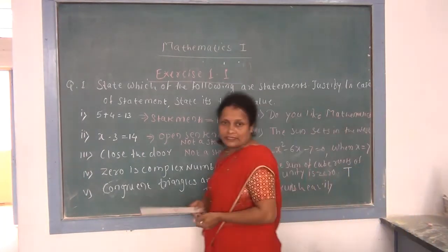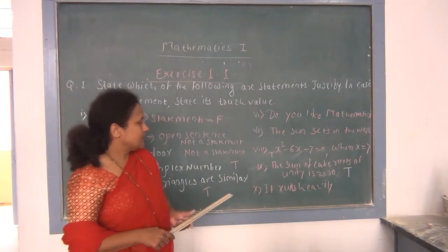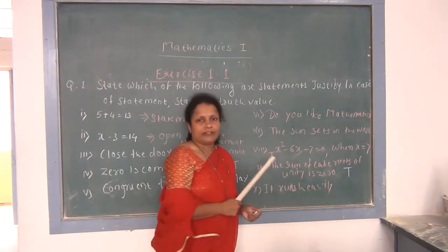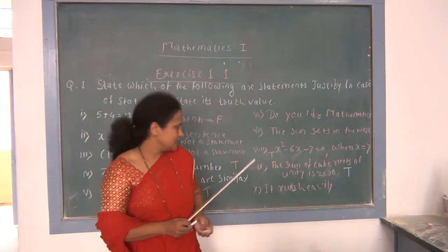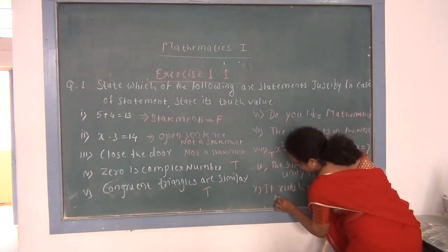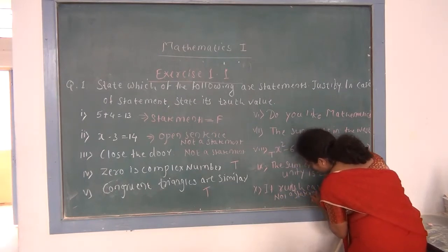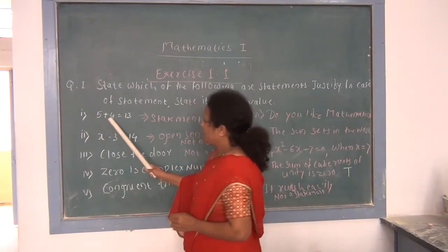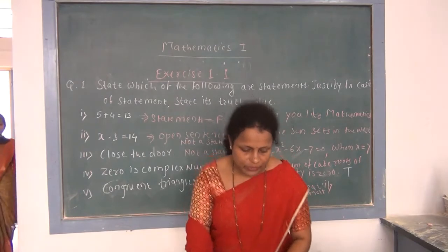The last sentence — 'It runs heavily' — we can't define its truth value as true or false, so it is an open sentence and not a statement. This is question number 1, which carries 1 mark for each sub-part.